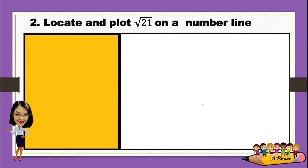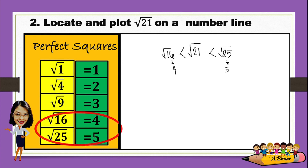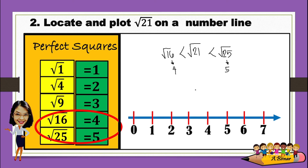Next: the square root of 21. Again, this is a non-perfect square. From the list of perfect squares, we can say that the square root of 21 is between the square root of 16 and the square root of 25. The square root of 16 is 4, and the square root of 25 is 5. From here, we can now plot this on a number line. Since it is between 4 and 5, we can plot the square root of 21 between 4 and 5.